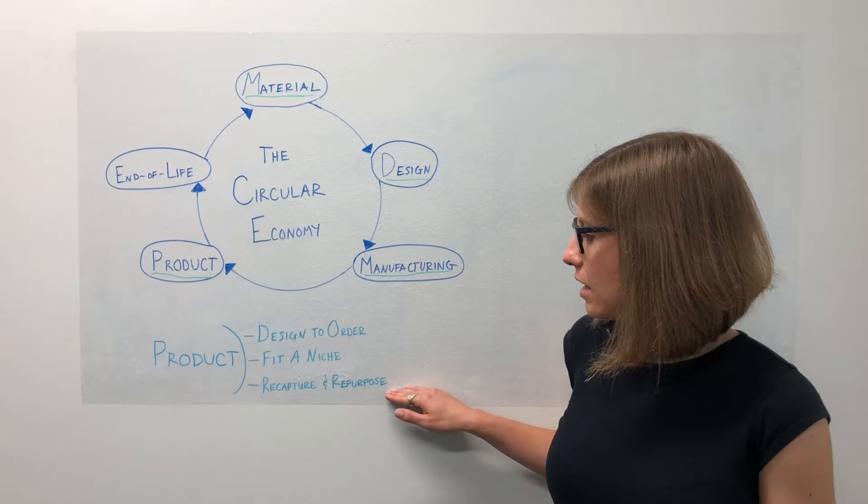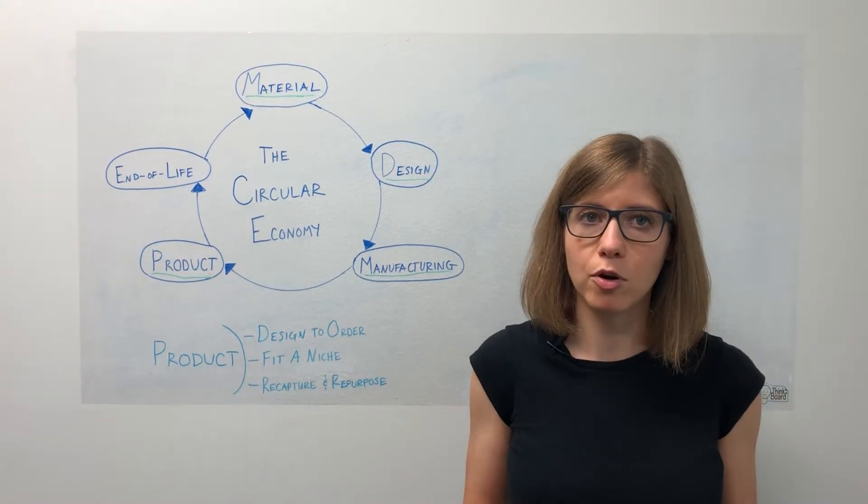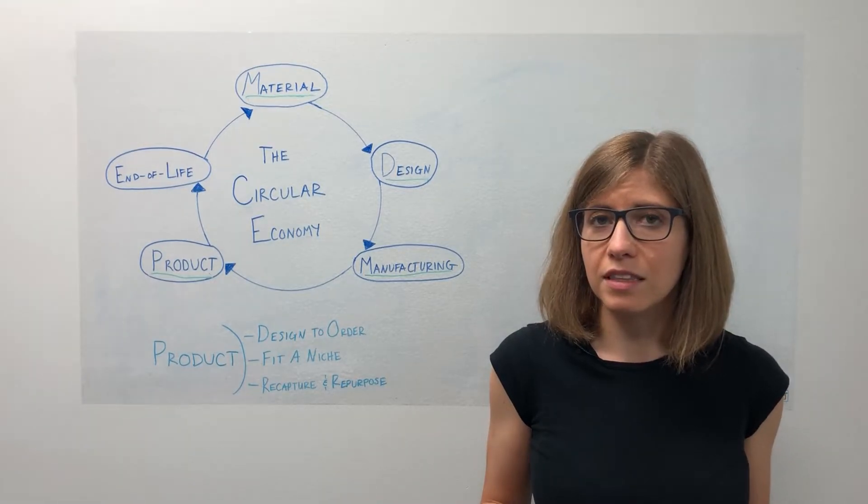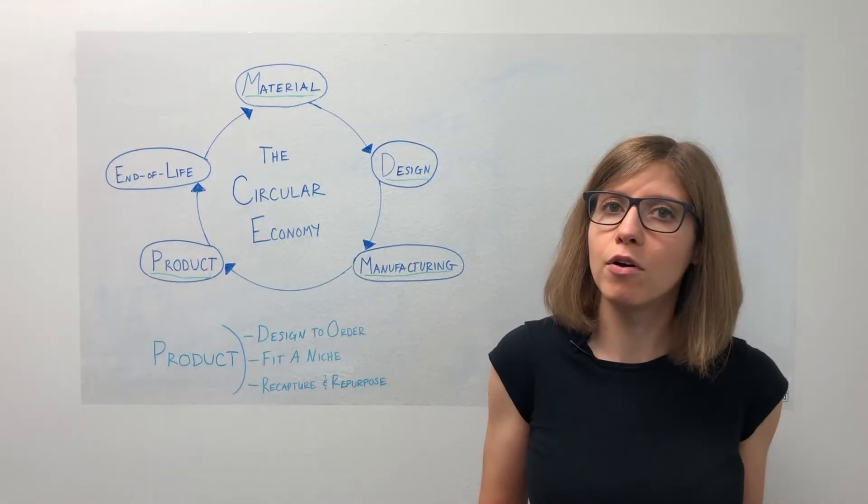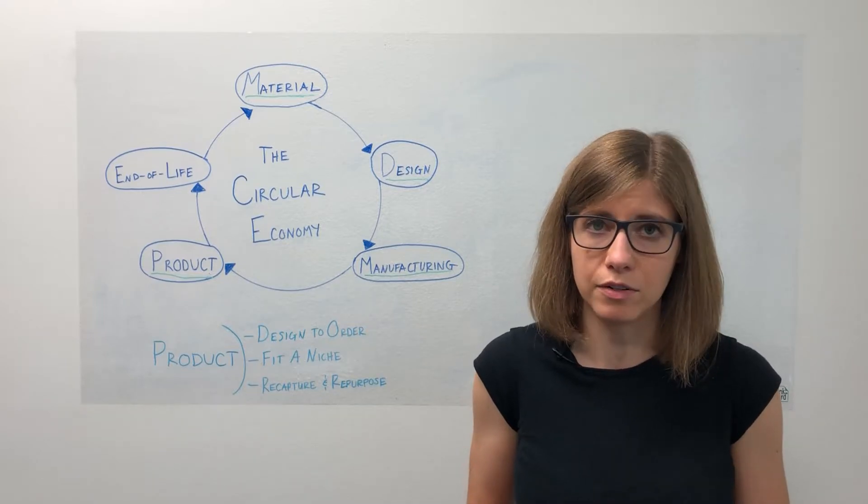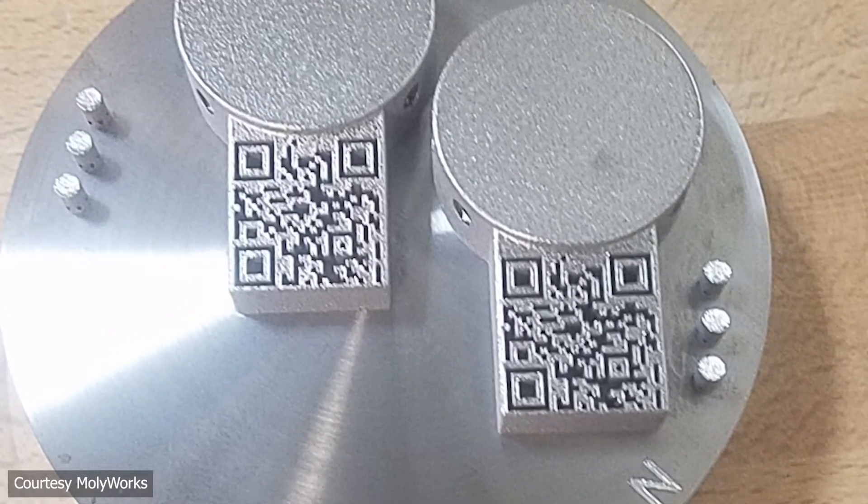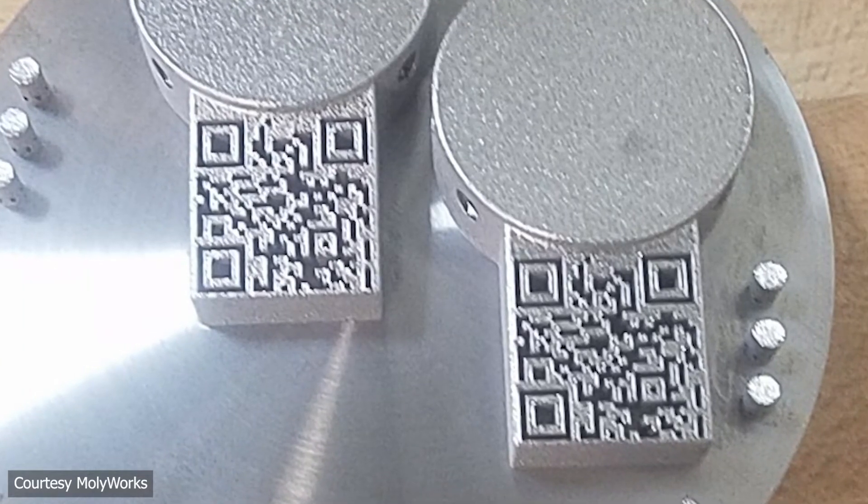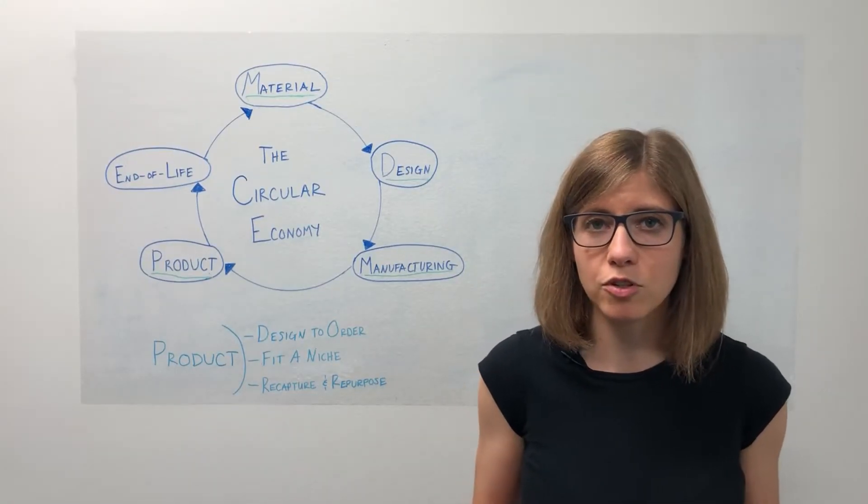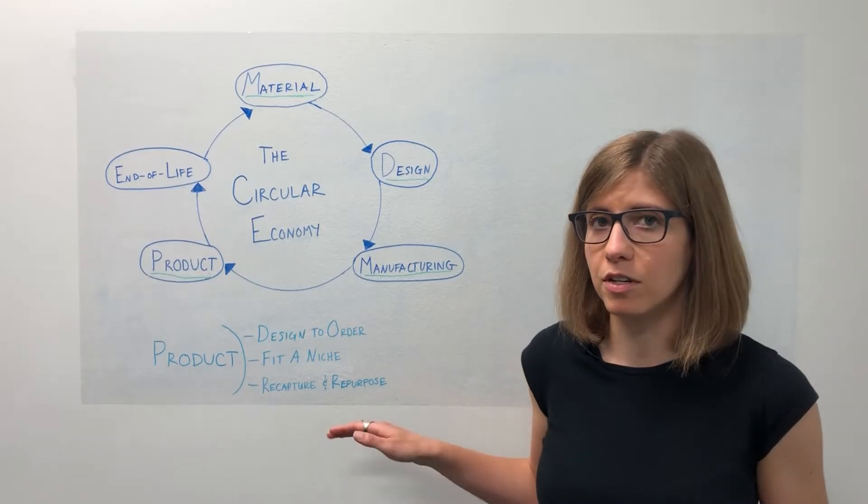Finally, 3D printing enables easier recapture and repurposing of products at the end of their life cycle. If you're paying attention in the material and design videos, you know that 3D printing allows us to use fewer materials and to use less material. It also enables us to add QR codes and other kinds of identifying information into products so that when that material is eventually recaptured, it's easier to process into something new.